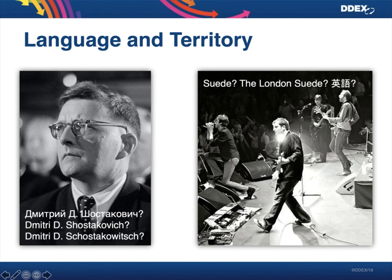There are other aspects to separate out — one that is quite complex is different languages and different territories. On the left-hand side you see the image of a Russian composer. What's the right way of writing his name? In Russian you would always spell out his middle name; in English you would most likely just put a 'D'; and in German they don't care about middle names, so he would just be Dmitri Shostakovich.